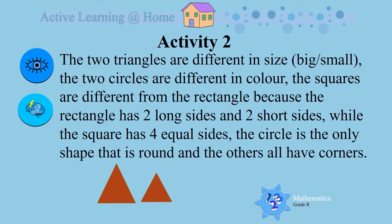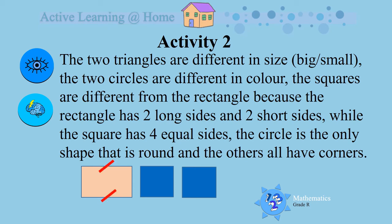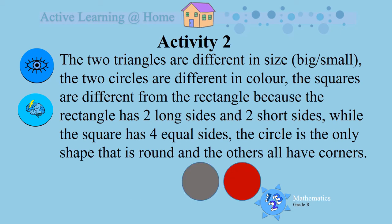The two triangles are different in size. The two circles are different in color. The squares are different from the rectangle because the rectangle has two long sides and two short sides. The square has four equal sides. And if you look at the circle, you will see that the circle is the only shape that is round. And all the other shapes have corners.